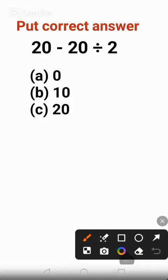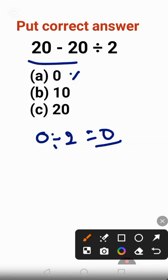This is the reason why a lot of people would have gotten the wrong answer when they solved this question. 20 minus 20 is 0, divide by 2, equal to 0. And this is a wrong answer.